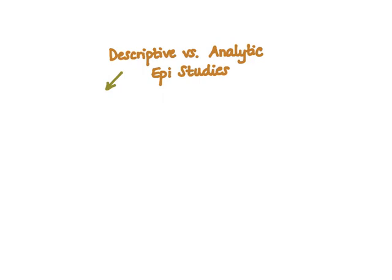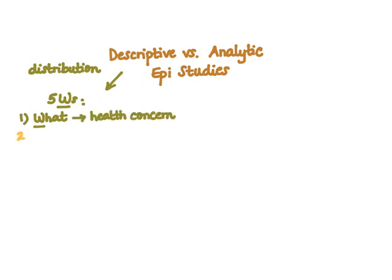Starting with descriptive studies, these focus on the first part of the definition of epidemiology — distribution — describing person, place, and time factors. These can be answered via the five W's. Number one, the first W is 'what' — this is defining the health concern. Number two is 'who' — this is defining the human population.